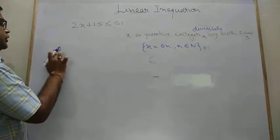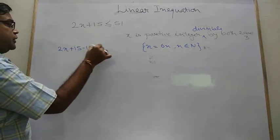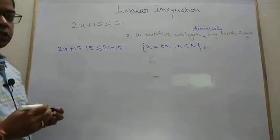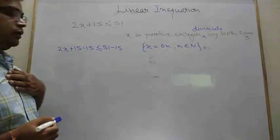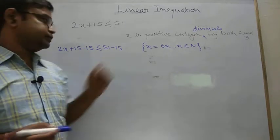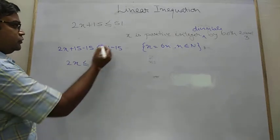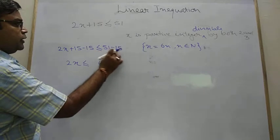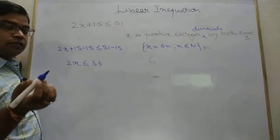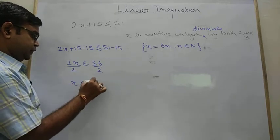So 2x plus 15 minus 15 less than equals to 51 minus 15. As we discussed, there is no change of inequality if we add or subtract any number from both sides. So in this case what we have, we have 2x less than equals to 36. Now if we divide both sides by positive 2. Again there is no change in sign. So we can divide by 2. It's 18.